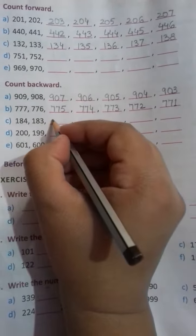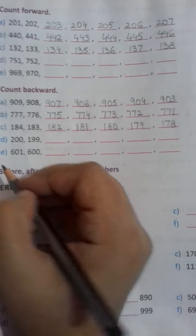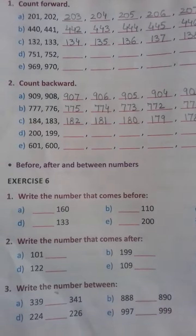Part A: 909, 908. Children, 908 comes before 909. So we have to write the next number that comes before 908. Why? Because we are going in the backward direction. So what comes before 908? 907.